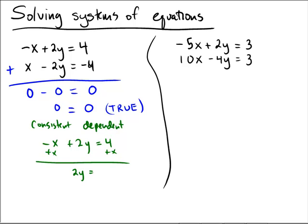2y equals x plus 4 and then divide by 2 and say that it was consistent dependent. It's the exact same line and what is the line? It's y equals one half x plus 2. In other words, we write it into a form that for some people might be easier to read, the slope intercept form in this case.